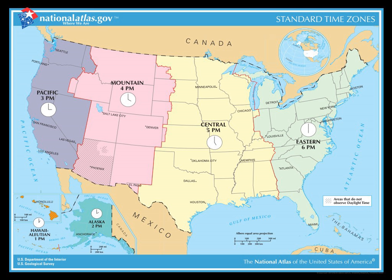During World War II, Congress enacted the Wartime Act 56 Stat. 9 on January 20, 1942. Year-round DST was reinstated in the United States on February 9, 1942, again as a wartime measure to conserve energy resources. This remained in effect until after the end of the war. The amendment to the Wartime Act 59 Stat. 537, enacted September 25, 1945, ended DST as of September 30, 1945. During this period, the official designation "wartime" was used for year-round DST — for example, Eastern War Time would be the equivalent of Eastern Daylight Time during this period.